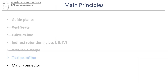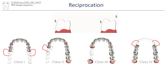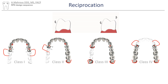Reciprocation comes next. Reciprocation is provided by rigid metal structures like minor connectors, plates, and reciprocal clasps that are used to counteract the forces exerted on abutment teeth by retentive clasps. The reciprocal elements are added to each retentive clasp.